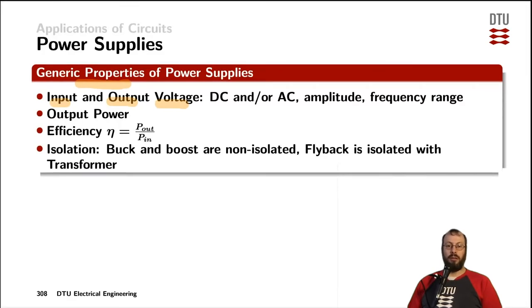For example from a solar cell you would get a DC input current or when driving a light emitting diode you would provide a DC output current. Otherwise the voltages can either be DC or AC then they are characterized by their amplitude and in terms of AC also by which frequency range the inputs and outputs can cover.